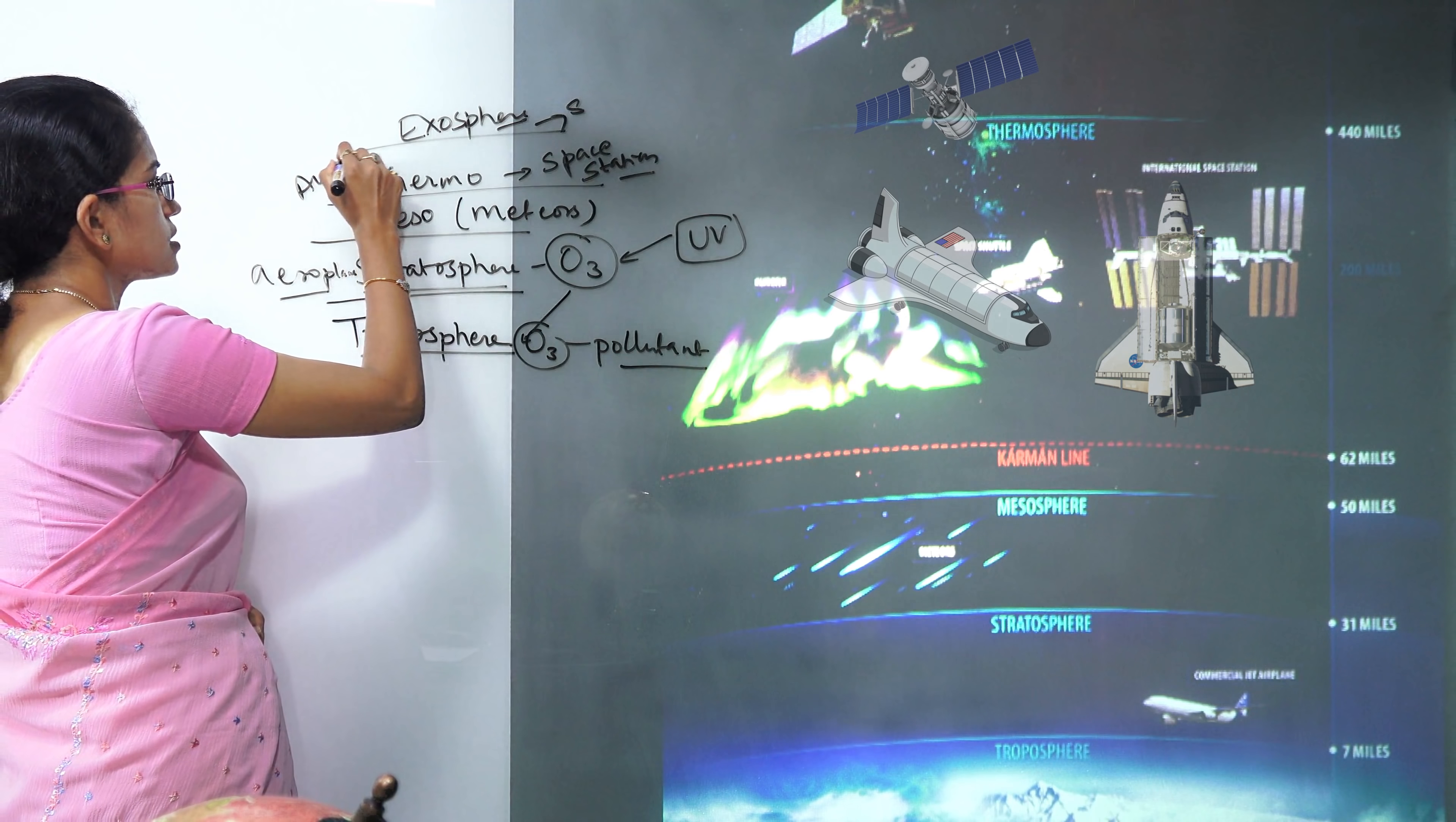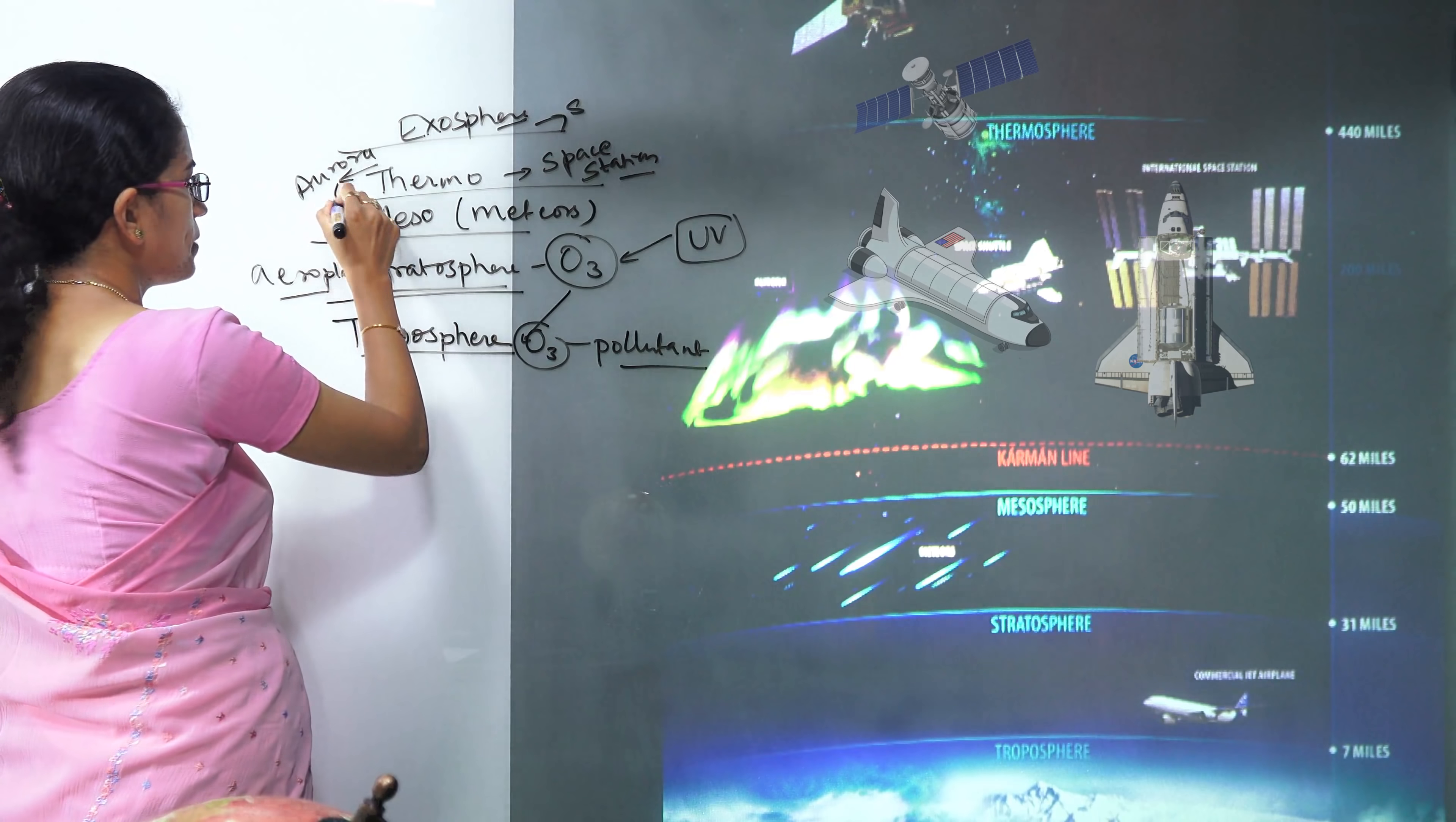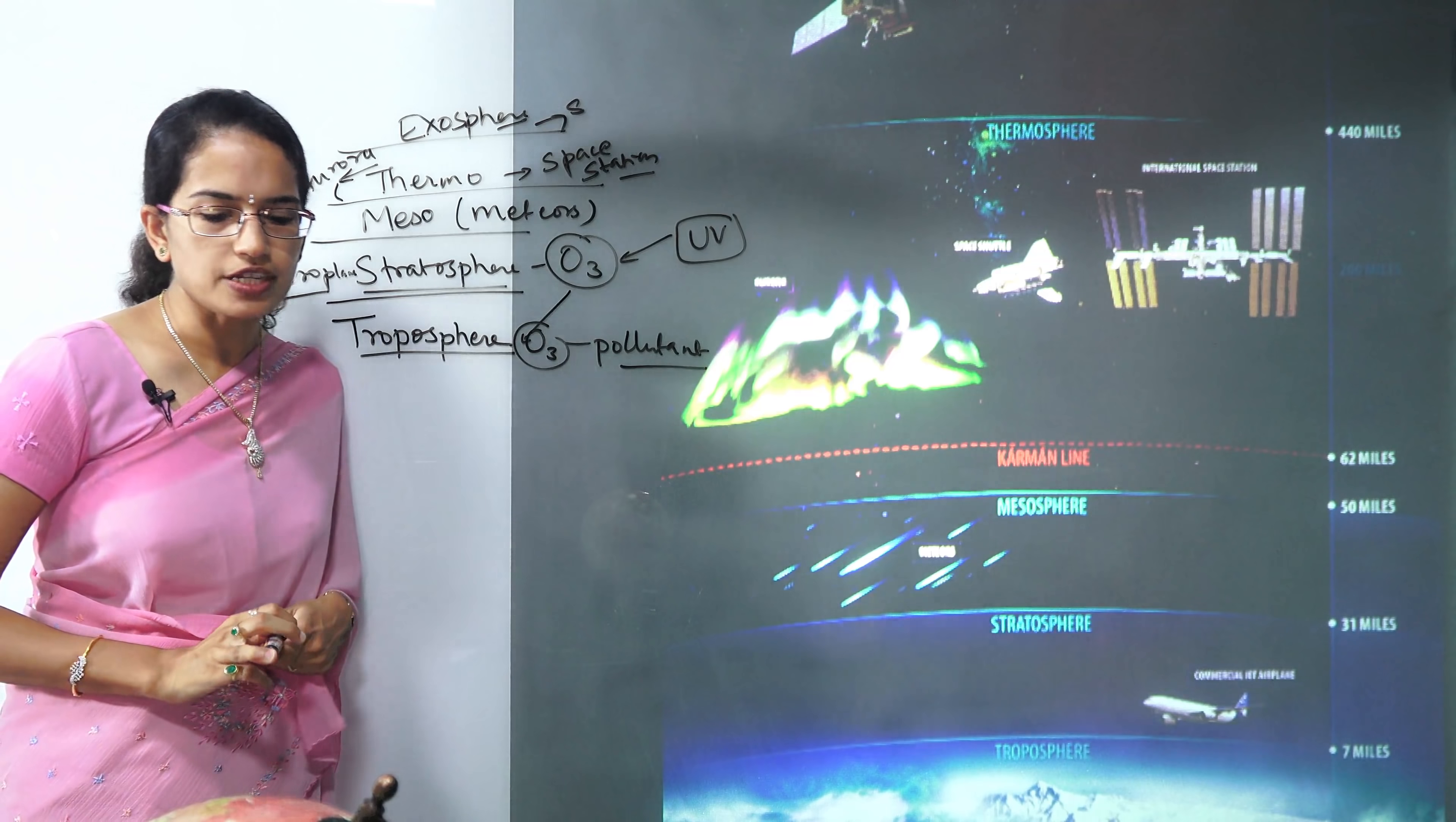Phenomena like aurora borealis or aurora australis in the north and the south hemisphere are commonly seen in thermosphere. So these are the common layers of the atmosphere that we talk about.